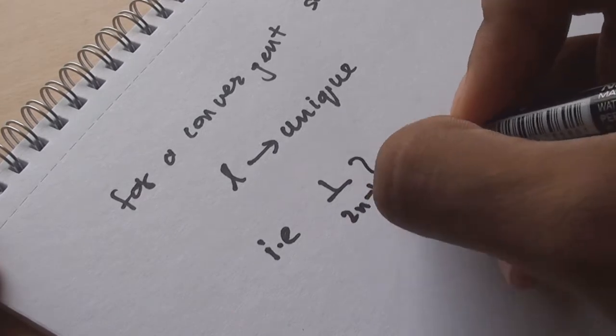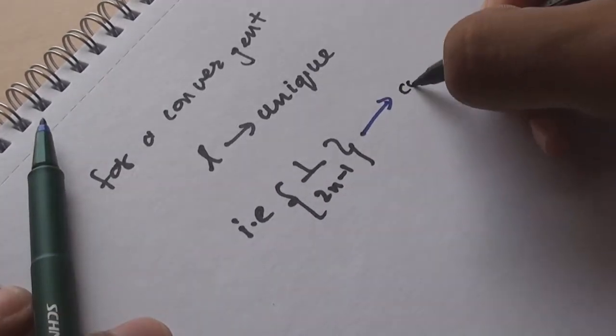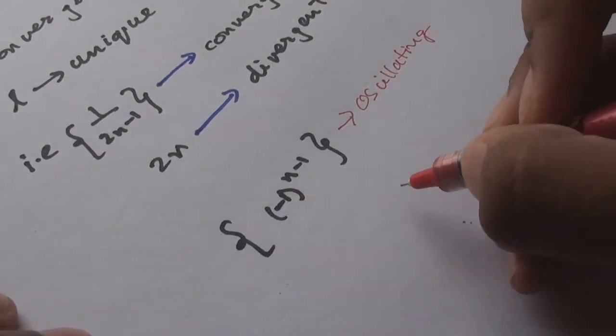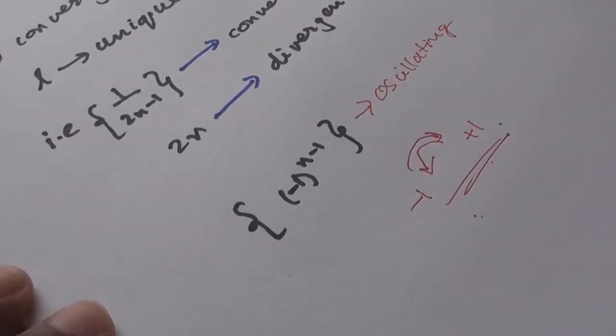For any convergent sequence, the limit is always unique. Which means that 1/(2n-1) is convergent, but however, 2n is divergent. But the sequence (-1)^(n-1) is oscillating. It oscillates between -1 and positive 1.